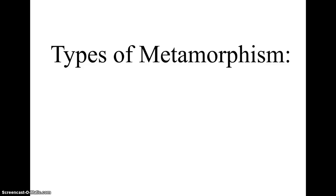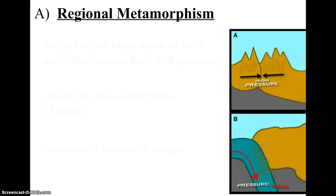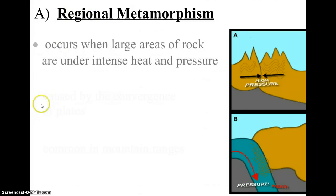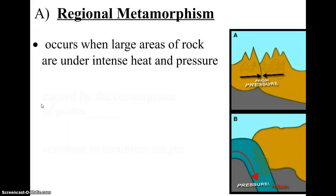There are two processes that would make a rock become a metamorphic rock. The first process is called regional metamorphism. When we think of a region, like the northeast region of the United States, we're talking about a large area. Regional metamorphism takes place over large areas, where the rocks in those places are put under intense heat and pressure.